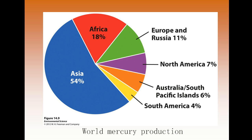Most mercury production — about two-thirds — comes from burning fossil fuels, with a majority of global mercury production coming from Asia.